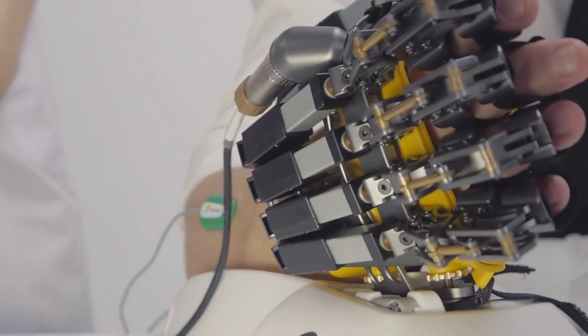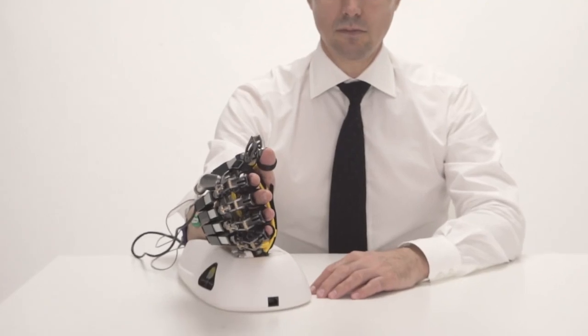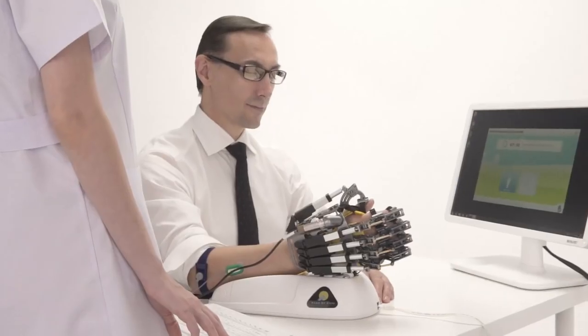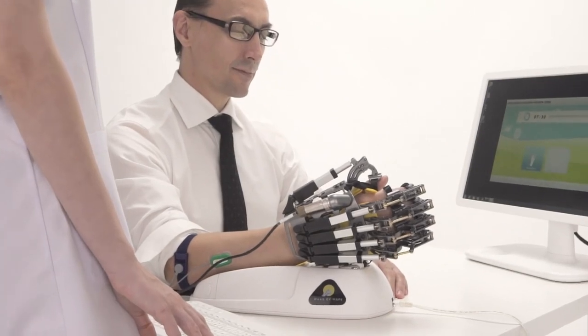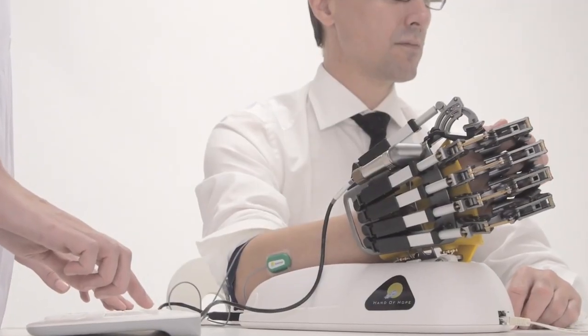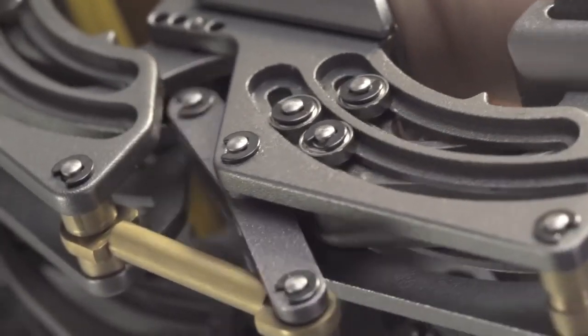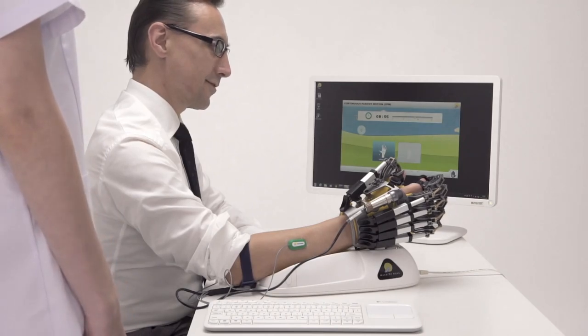Hand of Hope detects the patient's intentions to move the impaired hand. Voluntary EMG signals are commanded by the brain and detected by sensors. As an active and assistive device, it processes these signals and delivers them to the hand brace. In that way, the robotic arm understands that the patient wants to open or grasp the hand.